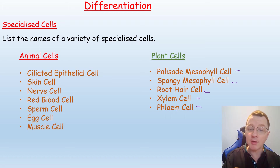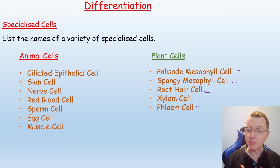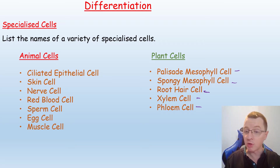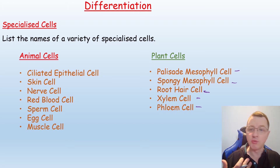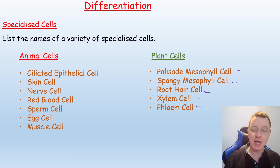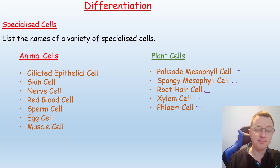We also have the phloem cell, which will transport the products of photosynthesis — sugars like sucrose — both up to flowers for use in nectar and all the way down to the root cells so it can be utilised in respiration.